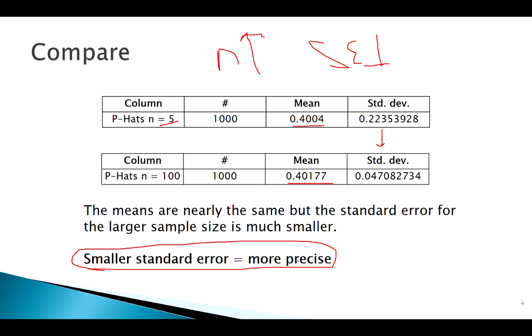So how do we calculate this? Remember, with x bar estimating mu for quantitative data, our standard error was sigma over the square root of n.